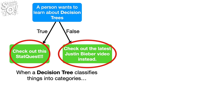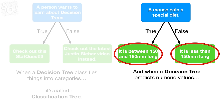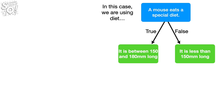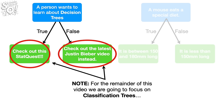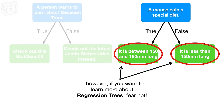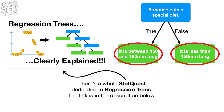When a decision tree classifies things into categories, it's called a classification tree. And when a decision tree predicts numeric values, it's called a regression tree. In this case, we're using diet to predict a numeric value for mouse size. For the remainder of this video, we are going to focus on classification trees. However, if you want to learn more about regression trees, there's a whole StatQuest dedicated to regression trees — the link is in the description below.